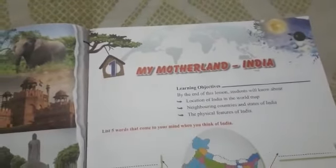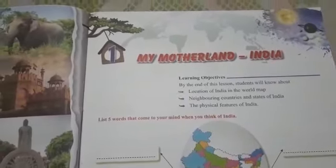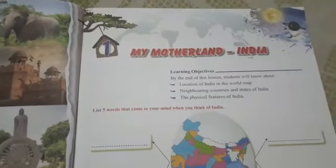First chapter: My Motherland India. In this chapter, we will explore India — where is India on the world map, how many neighboring countries, how many states and union territories, and what are the physical features.